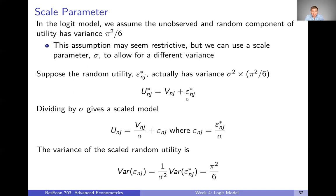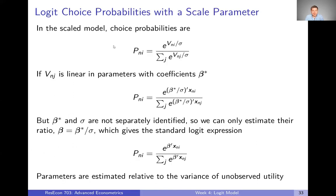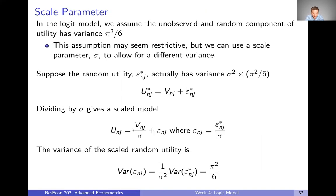Now let's divide by sigma. If we divide by sigma, we divide our representative utility by sigma and also divide epsilon by sigma. We call the result U instead of U star, and now the variance of epsilon is exactly pi squared — what we wanted. In this scaled model, instead of having representative utility, we have representative utility divided by sigma, and our assumption about epsilon holds. But now this sigma term floats around in the denominator of representative utility.